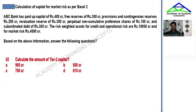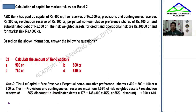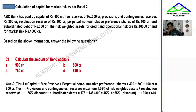Next we move to Tier 2 capital. Work it out and verify my answer. Tier 2 includes provisions and contingencies, but this is subject to a maximum of 1.25% of risk-weighted assets. Total risk-weighted assets are 10,000 plus 4,000 equals 14,000. So 1.25% of 14,000 gives us 175 crores for provisions and contingencies.